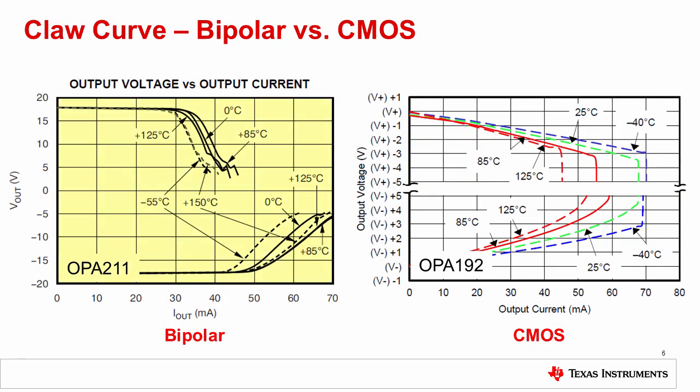Now we'll compare the claw curve for a bipolar amplifier to a CMOS amplifier. Notice that the CMOS curves have a much steeper slope than those of the bipolar device. This is because the output resistance of a CMOS stage is generally larger than that of a bipolar device for an equivalent collector or drain current. As these curves prove, the output swing of bipolar amplifiers are generally less affected by loading. With either type of amplifier, remember to give yourself enough distance away from the claw curve to ensure linear operation.